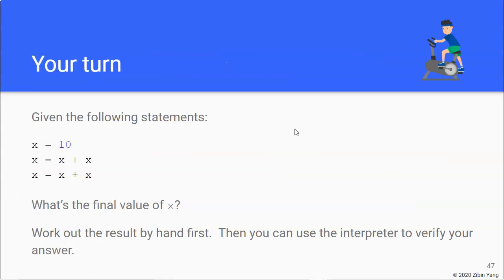And now it's time for a slightly more complicated exercise. So there are three lines of code here. The first line is x equal to 10, and then we do x equal to x plus x, and then we do that again. So I would like you to work out by hand first what is the final value of x, and then you can try it in Python. And hopefully the result you derive by hand matches what Python gives you. So pause the video and give this a try, please.